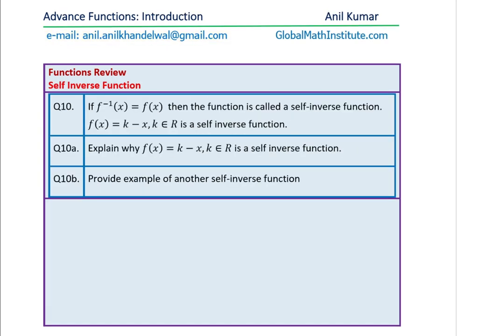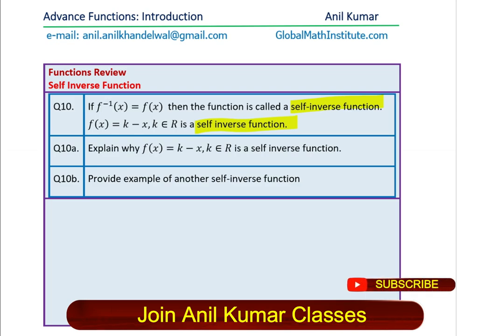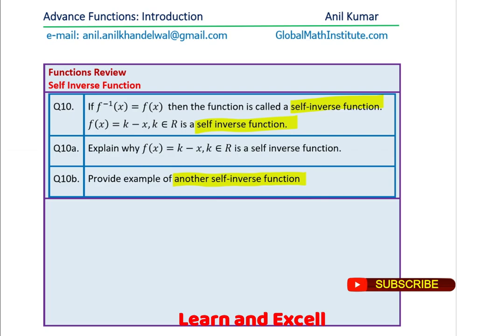Next question, this is based on inverse functions. You will know that some of these inverse functions are self-inverse functions. Question number 10. If f inverse of x is equal to f of x, then the function is called a self-inverse function. F of x equals k minus x, k belongs to real numbers is a self-inverse function. Explain why f of x equals k minus x, k belongs to real numbers is a self-inverse function. This is a communication based question. You need to explain why it is a self-inverse function. Question 10b, provide example of another self-inverse function. Open question for you. Provide as many as you can and pick up a question which is a rational function. That would be great.